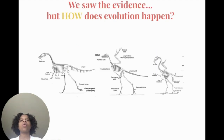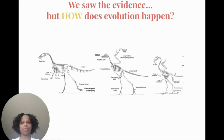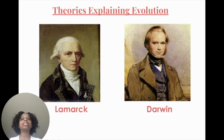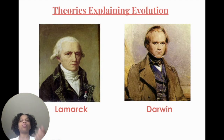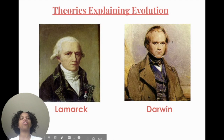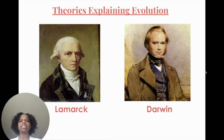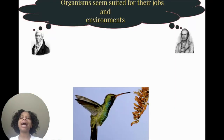A major question I want you to think about: we saw the evidence, but how does evolution actually happen? We have two major theories. We have this gentleman known as Lamarck, and then we have this gentleman known as Darwin. We are going to talk about each of their theories and how it contributes to the theory of evolution as a whole, but first some commonalities between them.